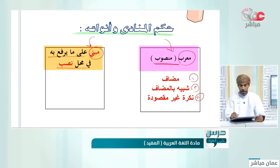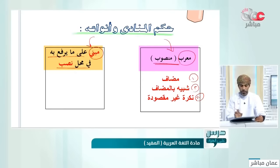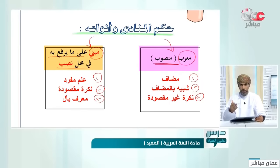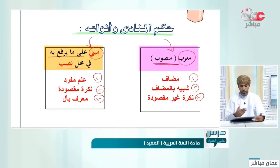المنادى المعرب: المضاف والشبيه بالمضاف والنكرة غير المقصودة، وعلامة النصب تكون في جميع هذه الأنواع. المنادى المبني: إما يكون علماً مفرداً، أو النكرة المقصودة، أو معرفاً بأل. المنادى المبني يكون مبنياً على ما يرفع به: إما بالضم أو بالواو أو بالألف على حسب نوع الكلمة.